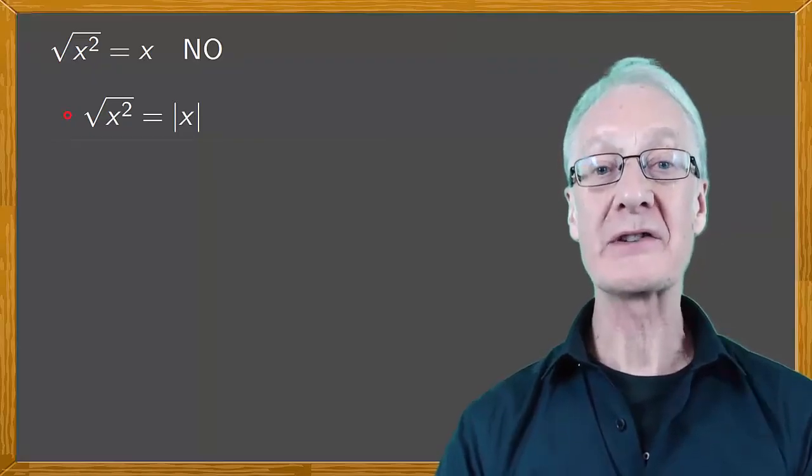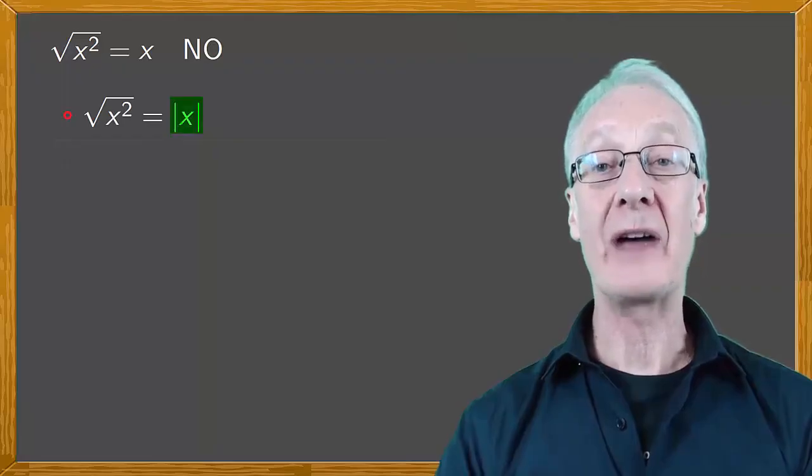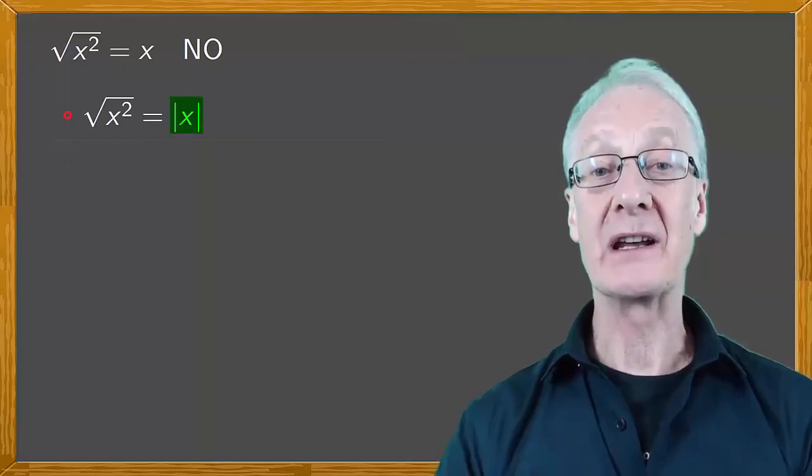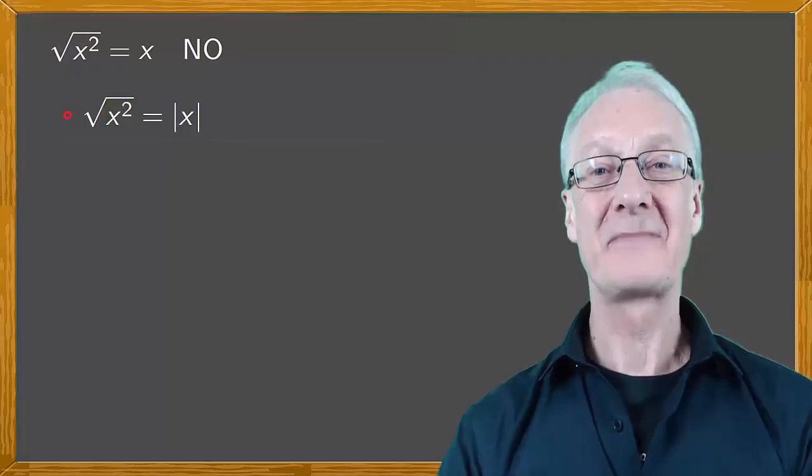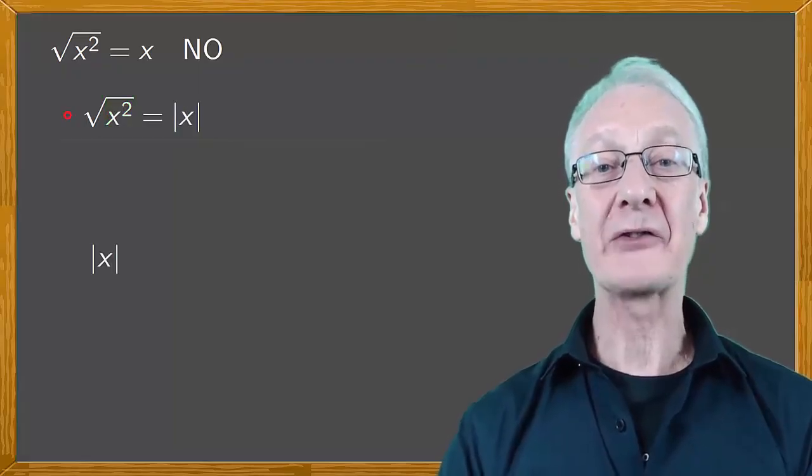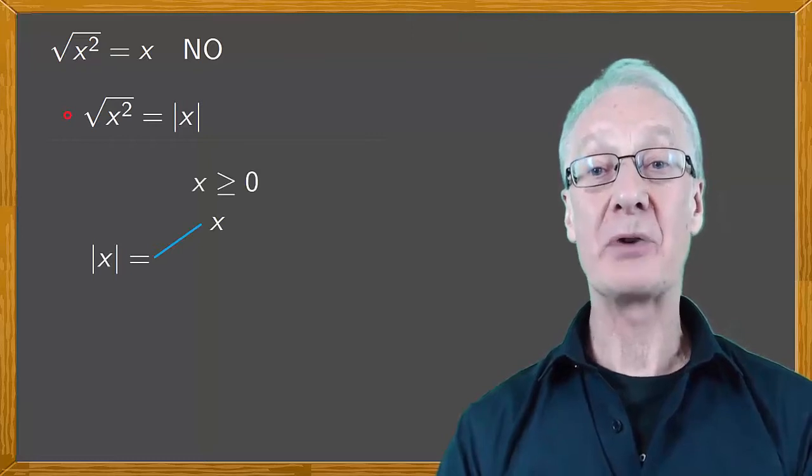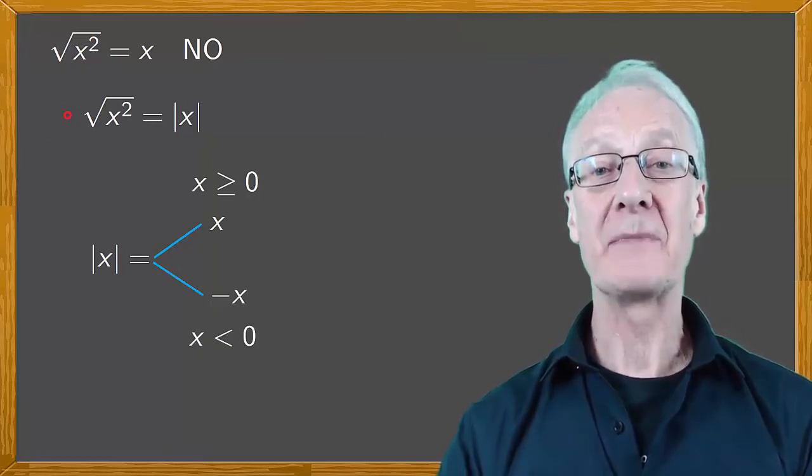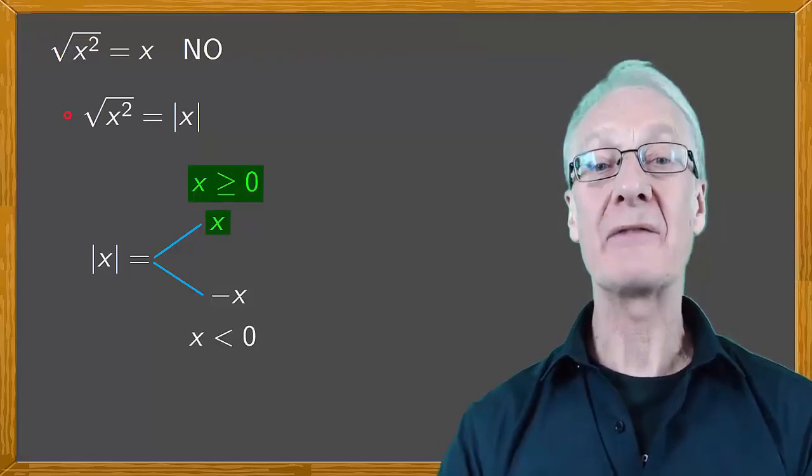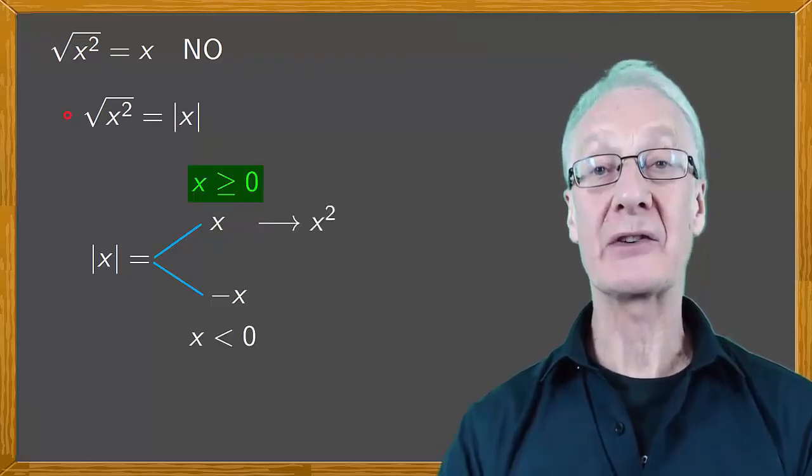We can do this by squaring the absolute value of x and noticing that we always get x squared. The absolute value of x is x when x is positive and minus x when x is negative. In the first case, we have the square of x, which is x squared.